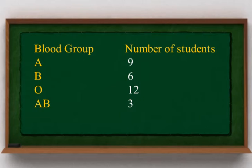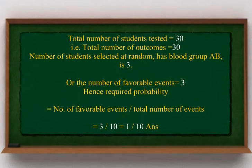A frequency distribution table gives blood groups of students: A – 9, B – 6, O – 12, AB – 3, Total – 30. Use this table to determine the probability that a student selected at random has blood group AB. Total number of students tested is 30; thus total number of outcomes is 30. Number of students with blood group AB is 3; thus favorable events = 3. Hence, required probability equals 3 divided by 30, which equals 1 divided by 10.